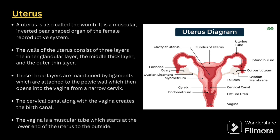Next comes the uterus, also called the womb. It is a muscular, inverted pear-shaped organ of the female reproductive system. The wall of the uterus consists of three layers: the inner glandular layer, the middle thick layer, and the outer thin layer. These three layers are maintained by ligaments attached to the pelvic wall, which then opens into the vagina at the cervix.